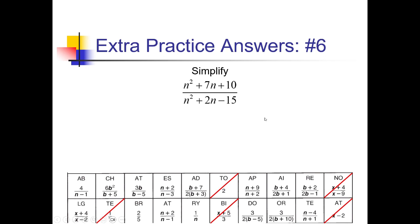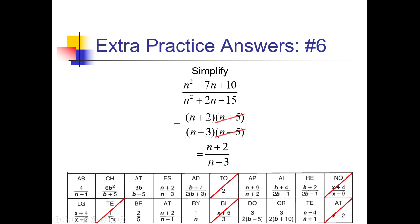On number 6, I've got a little bit of factoring to do before I can cancel anything. For my numerator, I need factors of 10 that add up to 7 — so (n + 2)(n + 5). Down below, I need factors of negative 15 that add up to 2. 3 and 5 works if I have negative 3 and positive 5, so (n − 3)(n + 5). The (n + 5)s cancel, leaving me with (n + 2) over (n − 3). I see it right here — 'es' — so cross that off.